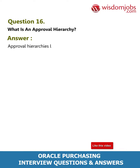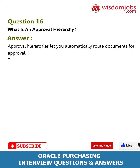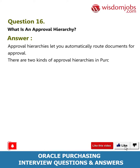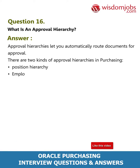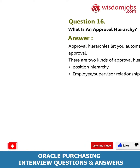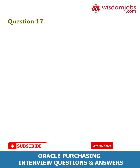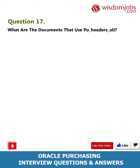Question 16: What is an approval hierarchy? Answer: Approval hierarchies let you automatically route documents for approval. There are two kinds of approval hierarchies in purchasing: position hierarchy and employee/supervisor relationships.